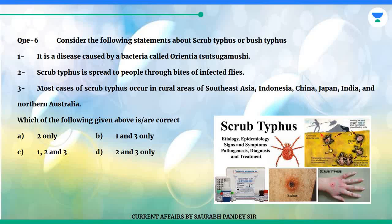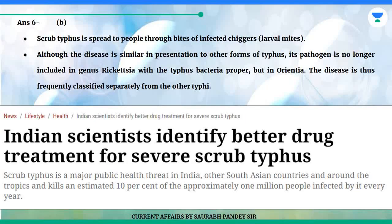Which of the following given above is correct? A. Two only. B. One and three only. C. One, two and three. D. Two and three only. The answer is B. Scrub typhus is spread to people through bites of infected chiggers, larval mites. Although the disease is similar in presentation to other forms of typhus, its pathogen is no longer included in genus Rickettsia but in Orientia, and is thus frequently classified separately.